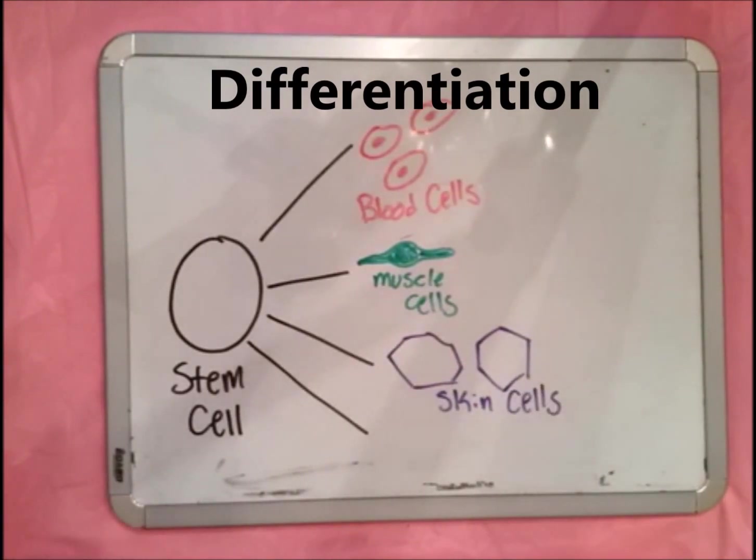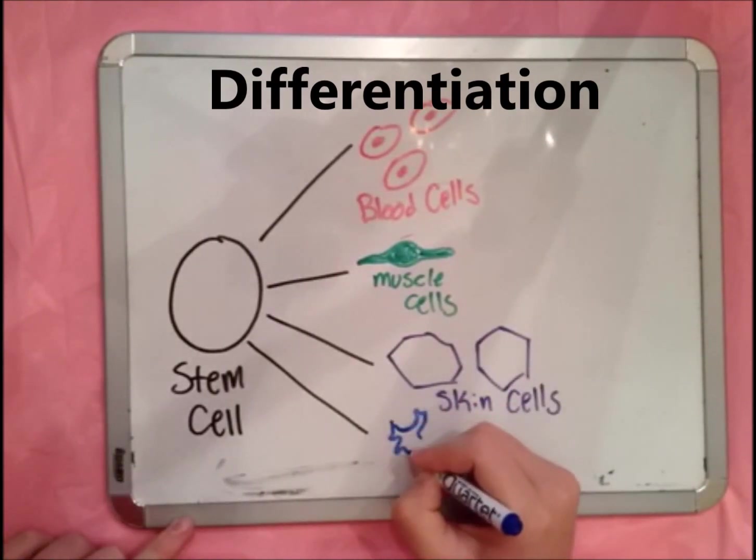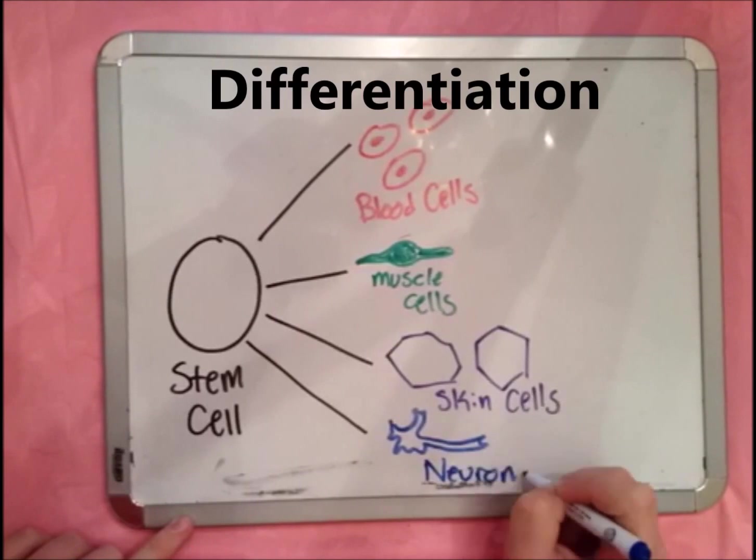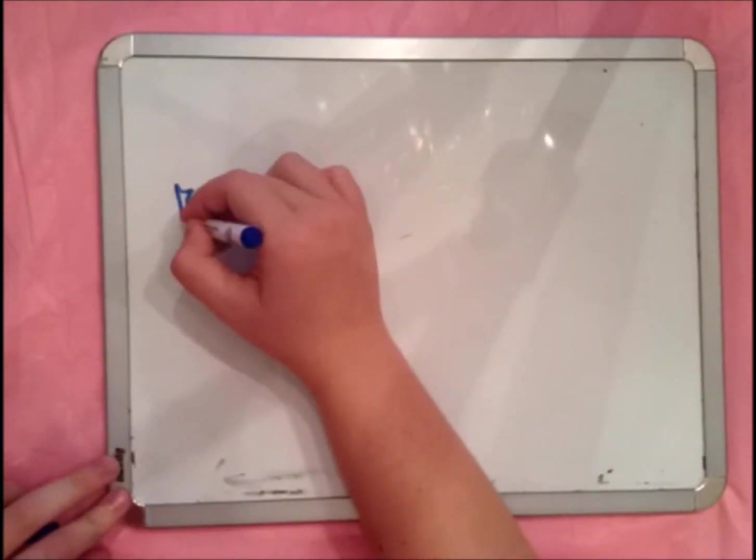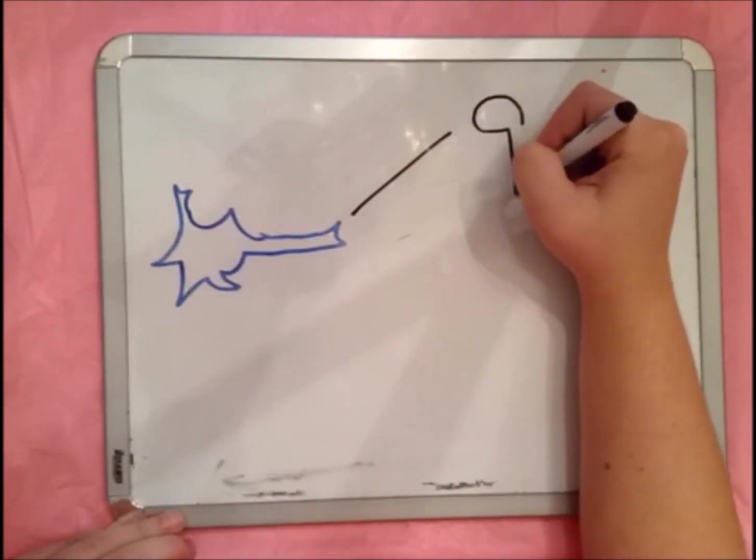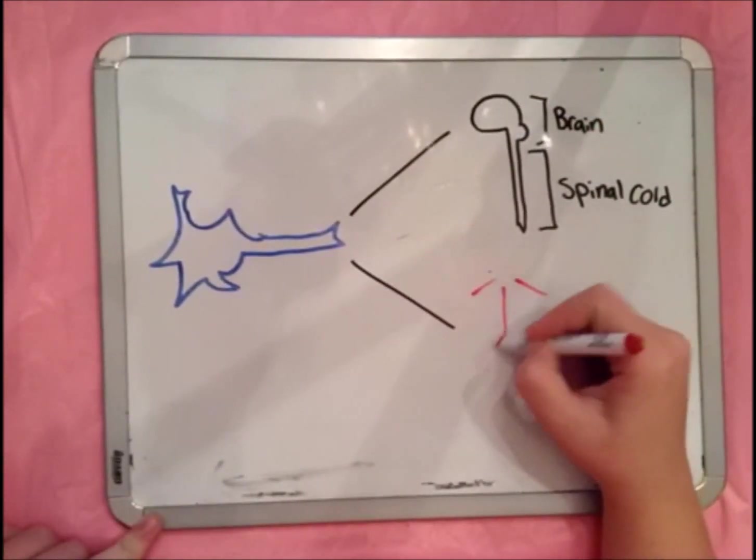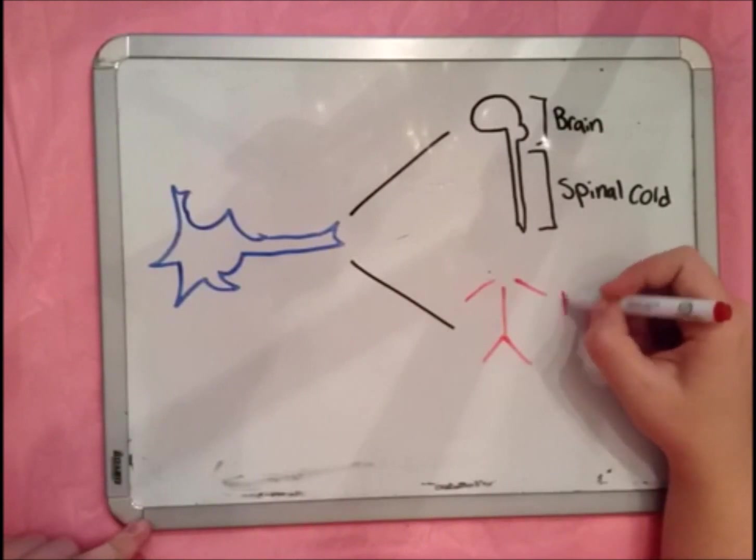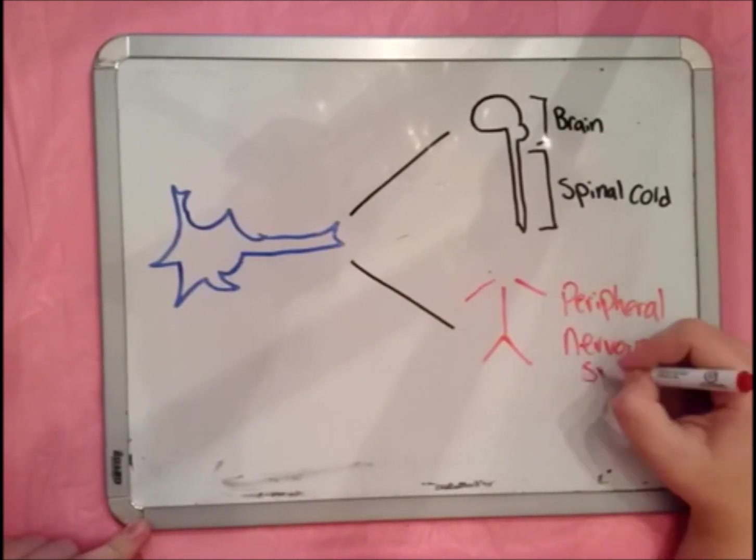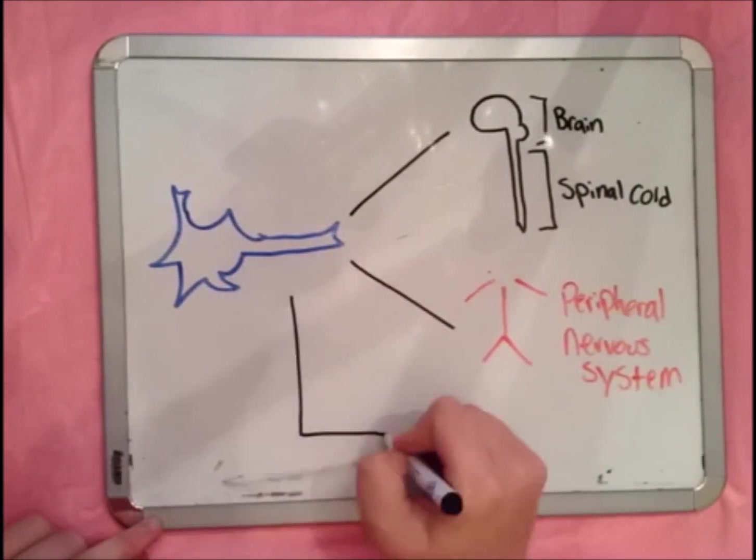Once the cells have specialized into a certain type of cell, they will differentiate further so they can do more specialized tasks. In the case of the nervous system, some become central nervous system cells that make up the brain and spinal cord. Some become the neurons found in the peripheral nervous system, controlling your muscle movements and relaying sensations such as temperature and pain.